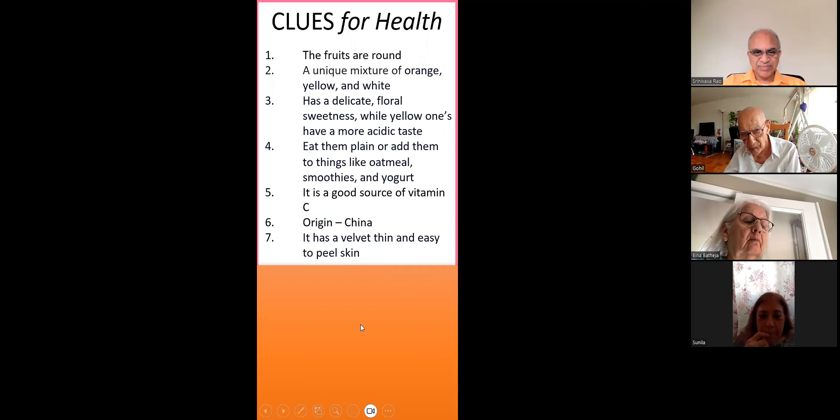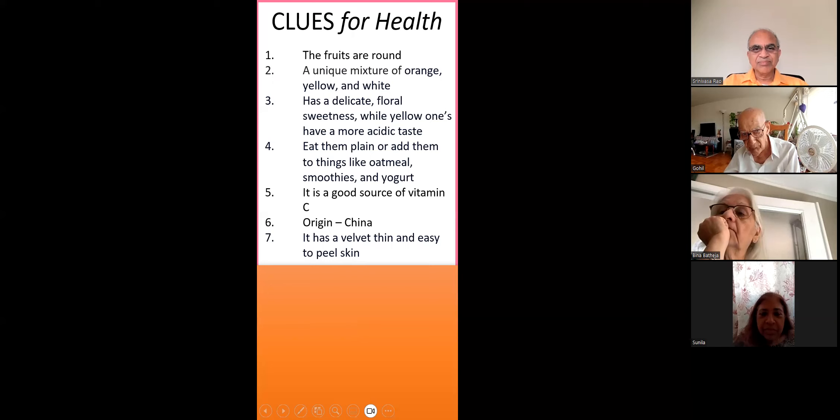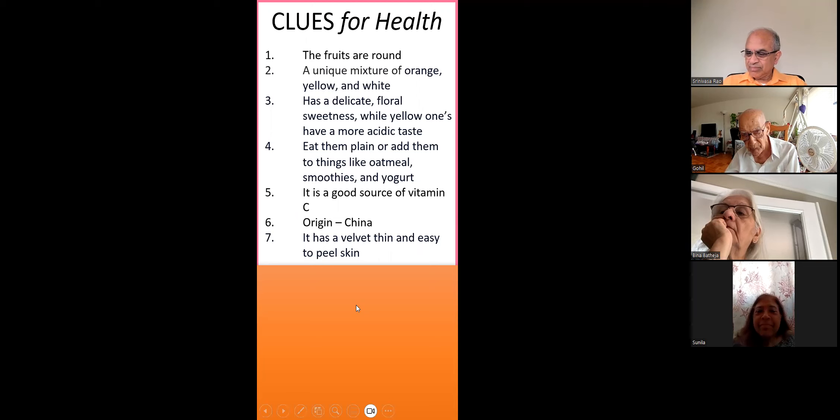Papaya. She's giving up such a big hint. It's good for diabetes. Whoever said it, good job. I was going to say apricot. I thought apricot, because it's fuzzy too, a little bit on the top.